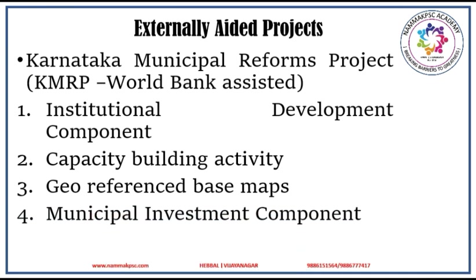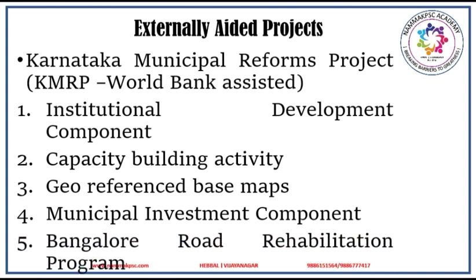Under this project, there is also a Municipal Investment Component, which provides investment support for urban infrastructure improvement in selected 32 urban local bodies of the state. There is also a Bengaluru Development Component, under which the Bengaluru Road Rehabilitation Programme and Greater Bengaluru Underground Drainage Programme have been taken up. Under the Bengaluru Road Rehabilitation Programme, about 125 km of core city road networks, including improvement of footpath, drainage, etc. have been taken up, and the road rehabilitation work has already been completed by BBMP.